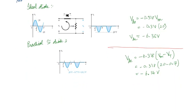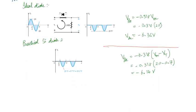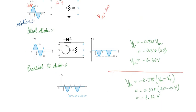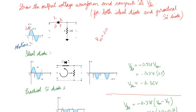For a practical diode (silicon case), there will be a voltage drop of 0.7V. So instead of an output peak of −20V, it will be reduced to −19.3V. Thus Vdc = −0.318 × (Vm − Vt) = −0.318 × (20 − 0.7). The Vt value for silicon is 0.7V. This circuit can be called a negative half wave rectifier — we can see the output waveform is only the negative half.